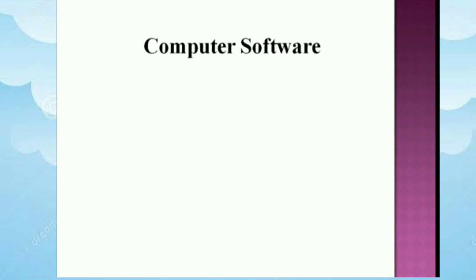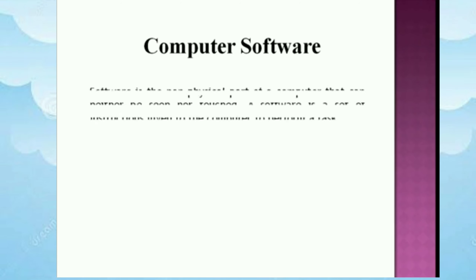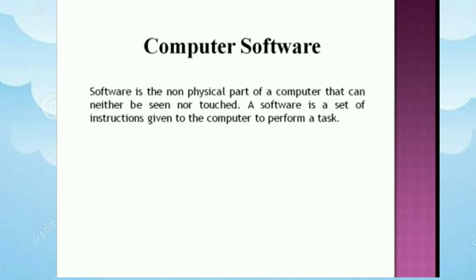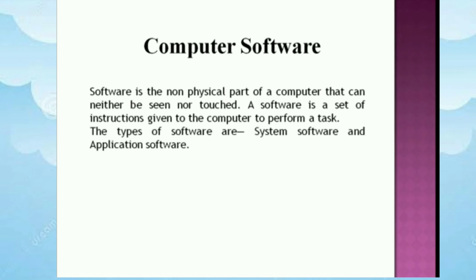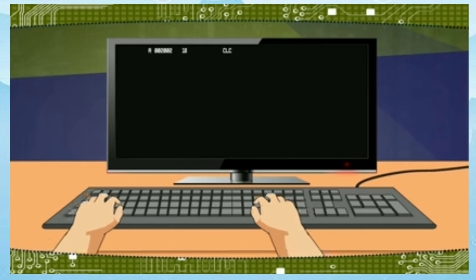What is Software? Software is the non-physical part of the computer that can neither be seen nor touched. Software is a set of instructions and code installed onto the computer to perform a particular task. The types of software are System Software, which includes the Operating System, and Application Software such as MS Paint, MS Word, MS PowerPoint, etc., to perform particular tasks.